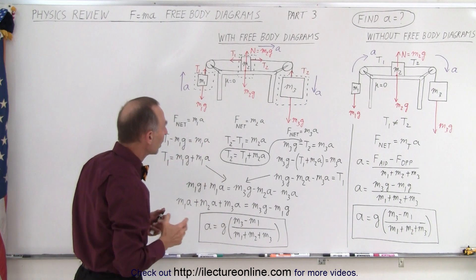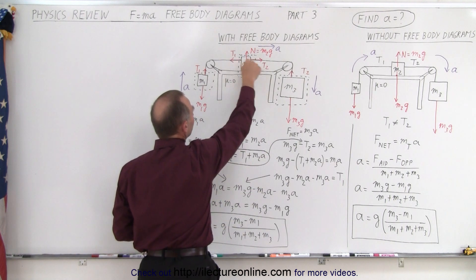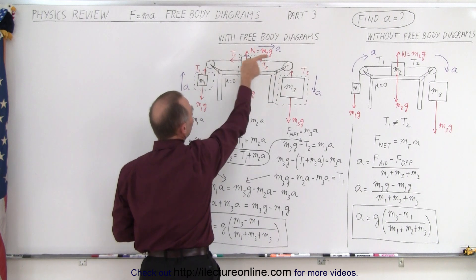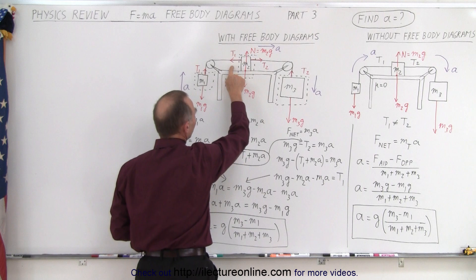The next equation, we end up with, again, F net equals M2A. These two forces cancel out, so only these two forces matter. The acceleration will be to the right for this block. So this is the aiding force, this is the opposing force. And notice how T1 acts in an opposite direction.